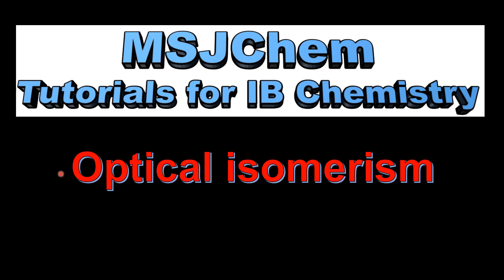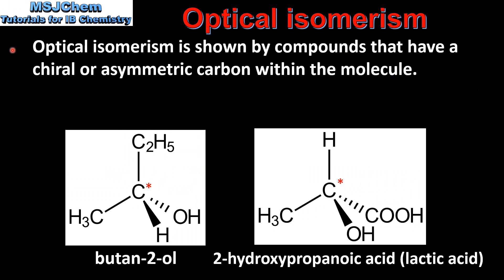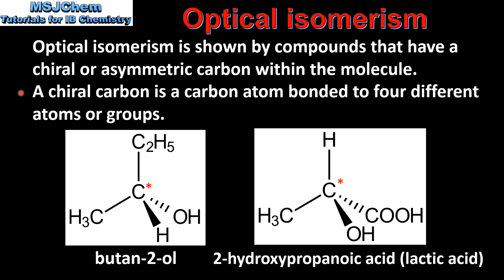This is MSJChem. In this video I'll be looking at optical isomerism. Optical isomerism is shown by compounds that have a chiral or asymmetric carbon within the molecule. A chiral carbon is a carbon atom bonded to four different atoms or groups.